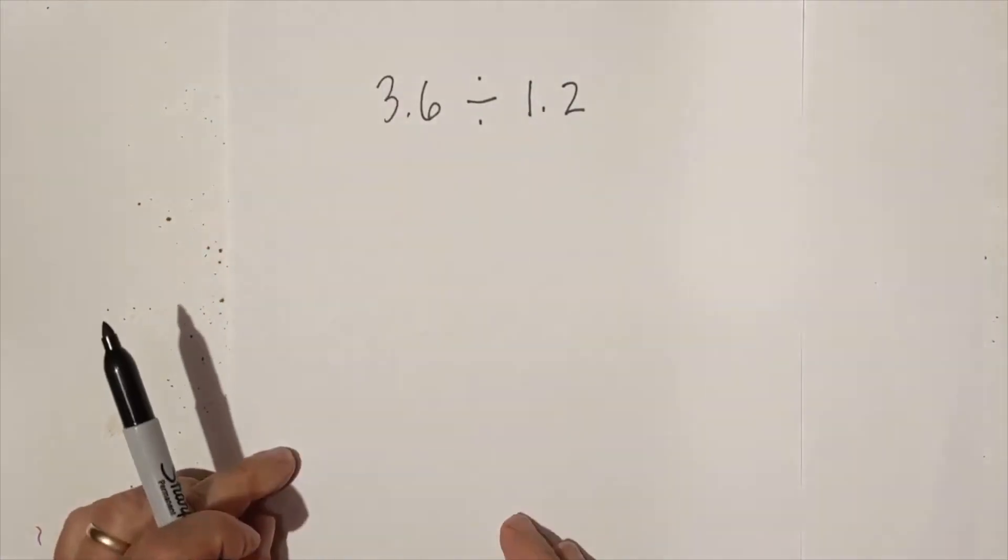So let's get started with some sample problems. Let's begin with this. We have three and six tenths divided by one and two tenths. I'm going to rewrite it in this format.